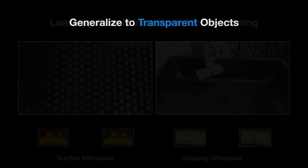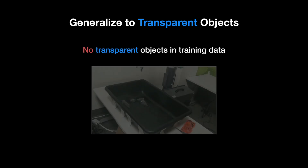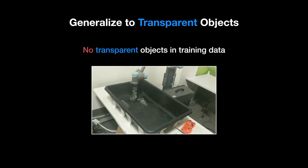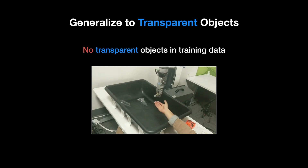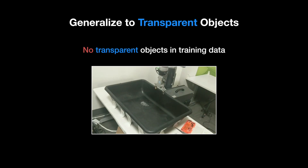Visual pre-training can dramatically improve the model's generalization ability. We show that our method can even generalize to transparent objects, even though the model has never seen transparent objects during training. In contrast, models trained from scratch struggle to pick up any transparent object.